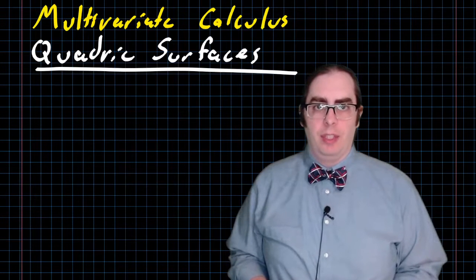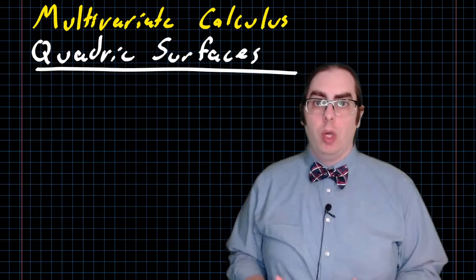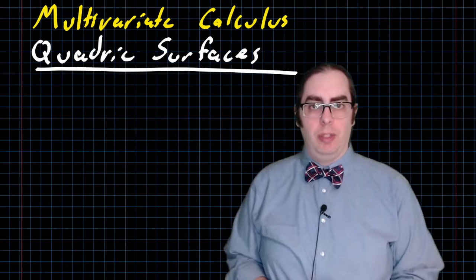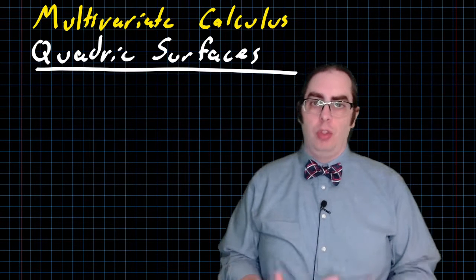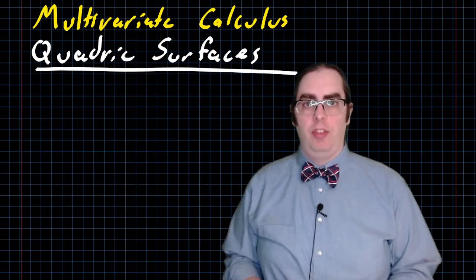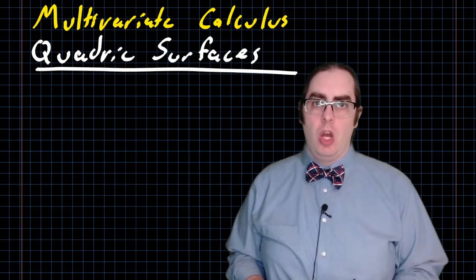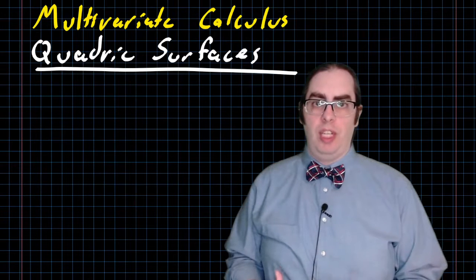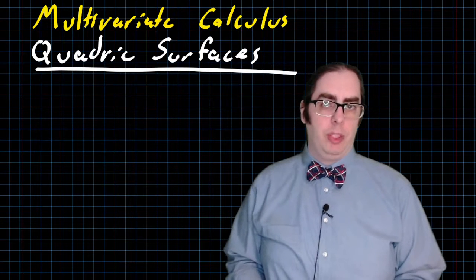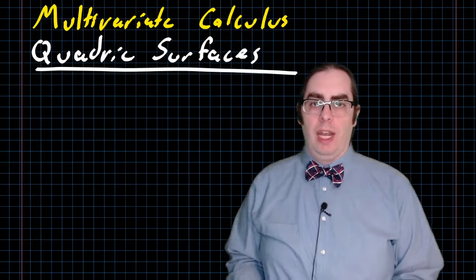Welcome back to Multivariate Calculus. In this video, we're going to be looking at quadric surfaces. Quadric surfaces are an extension of the conic sections that we've talked about previously, from two-dimensional curves into three-dimensional surfaces. While we will certainly be looking at each of the six quadric surfaces individually, what I really want to focus on in this lesson are a couple of tools for understanding the structure of a two-dimensional surface in three-dimensional space. Those tools are the trace of the curve and level curves.